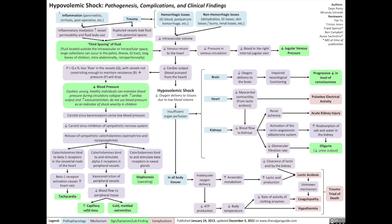There are four main pathophysiological causes of hypovolemic shock. The first is inflammation — serious, severe inflammation across the body, such as pancreatitis, cirrhosis, post-operative inflammation, etc. The second cause is trauma. The third cause could be bleeding, which could be the result of trauma, or it could be a GI bleed, postpartum bleed, etc. The body can also lose fluid volume in other ways, such as dehydration, through the GI tract in diarrhea or vomiting, through the skin such as burns, and through the kidneys.